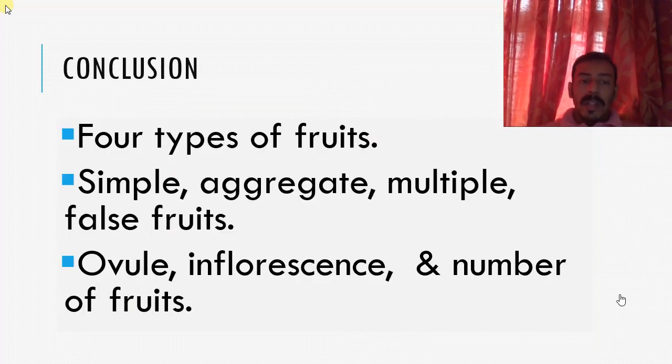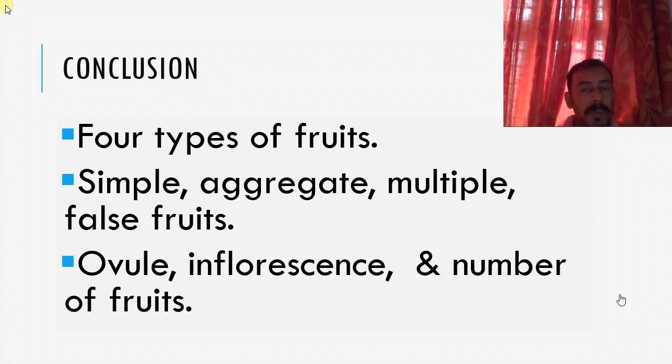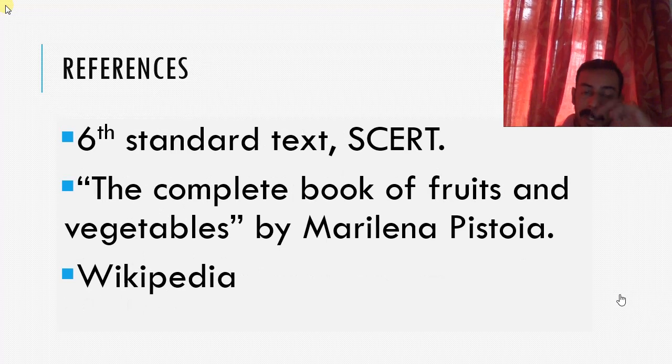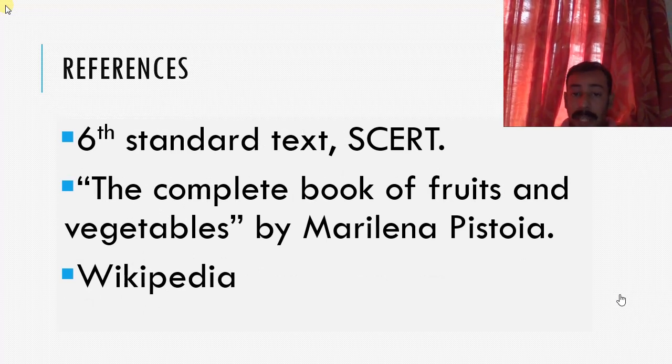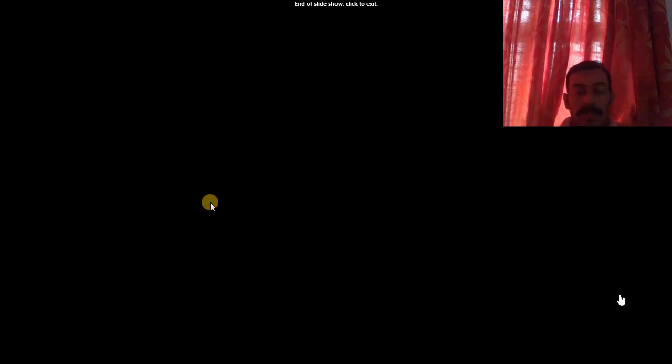So let me conclude. There are four types of fruits: simple, aggregate, multiple, and false fruit. Ovule, inflorescence, and the number of fruits—these are all things that you have to look and remember when you are studying these types of fruits. So if you want more reference, you can refer to sixth standard sections of the text of SCRT, The Complete Book of Fruits and Vegetables by Marilena Pistoya, and Wikipedia too. Thank you. That's the end of the class.